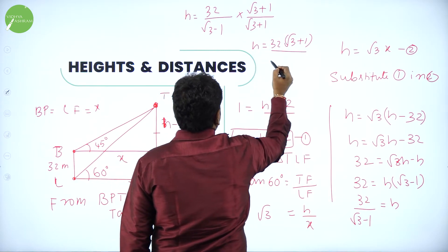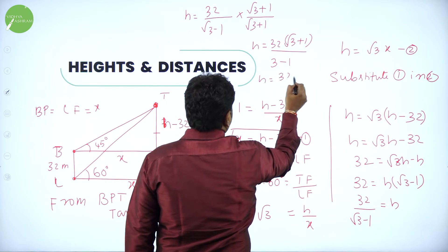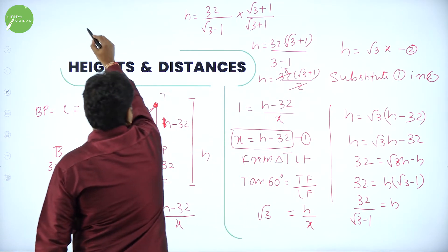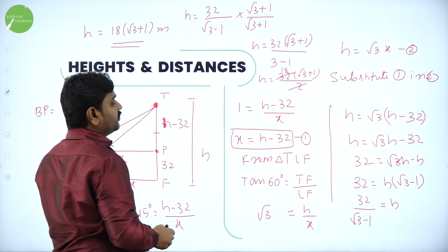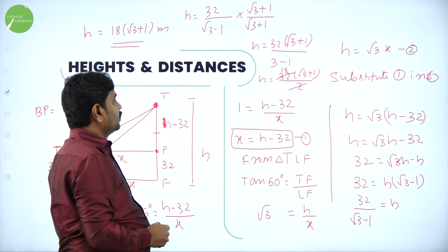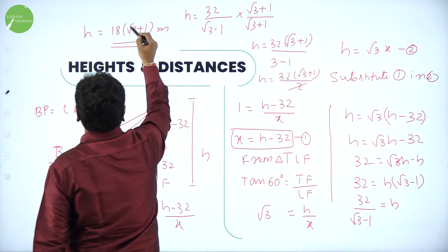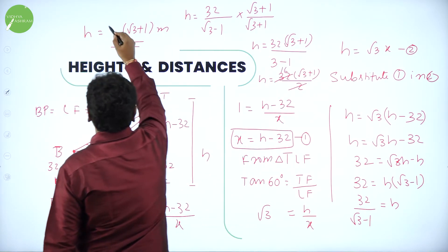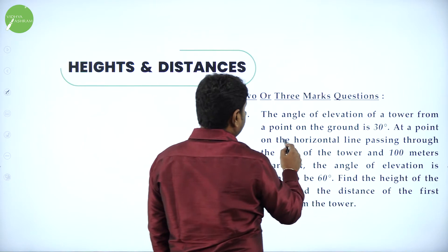Numerator becomes 32 root 3 times (root 3 plus 1) and denominator becomes (root 3)^2 minus 1^2 equals 3 minus 1 equals 2. So H equals 32 root 3 (root 3 plus 1) divided by 2. Simplifying, 32 divided by 2 gives 16, so H equals 16(root 3 plus 1) meters. This is the height of the tower.